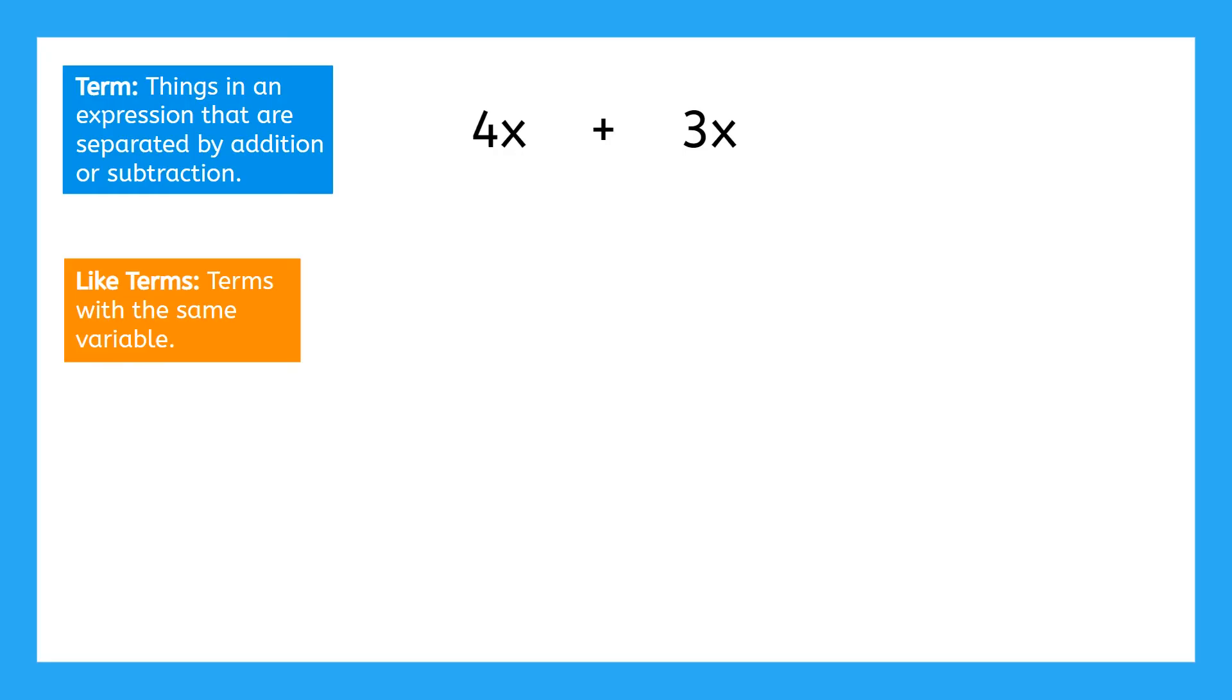We can think of combining like terms in two ways. One way is to identify the like terms in an expression like 4x and 3x and think, what are the coefficients? Remember, a coefficient is a number being multiplied by a variable. So here we have four and three as our coefficients. And we would combine them. So we would say four plus three, and that will give us seven. And then we just bring down the variable one time. So this would be 7x.